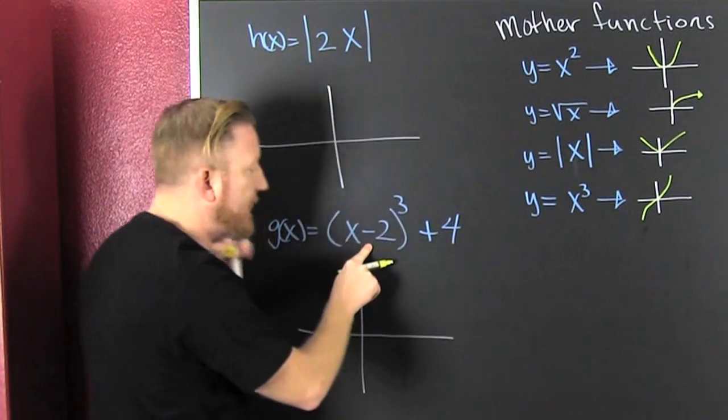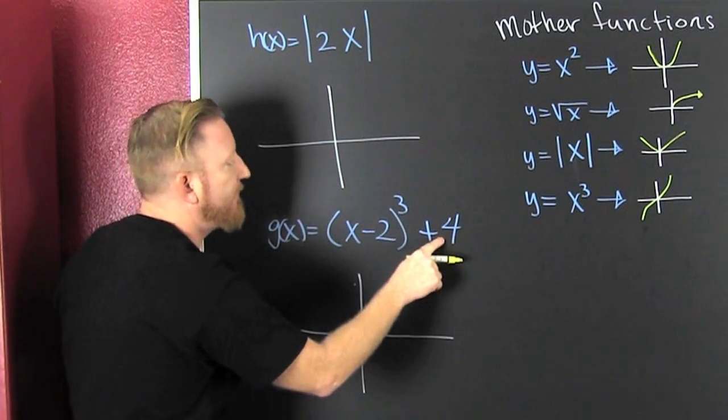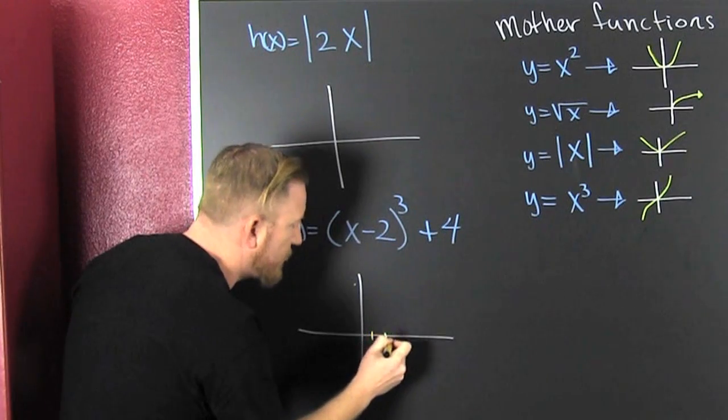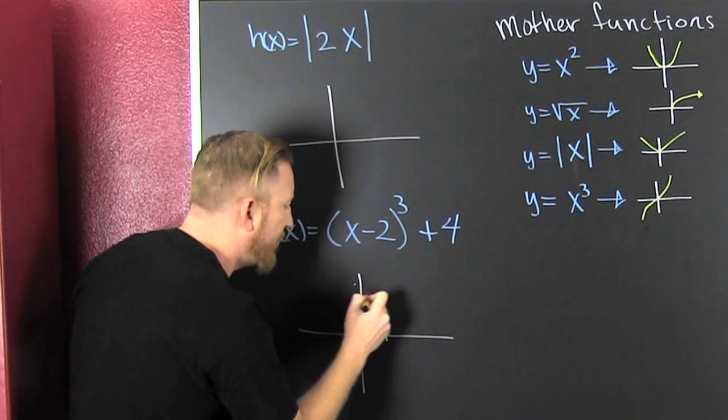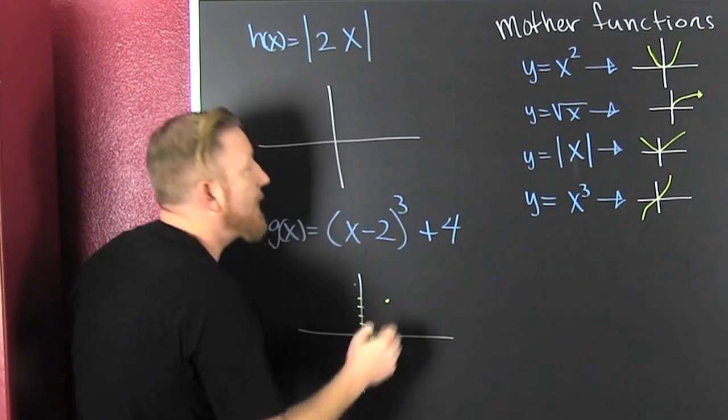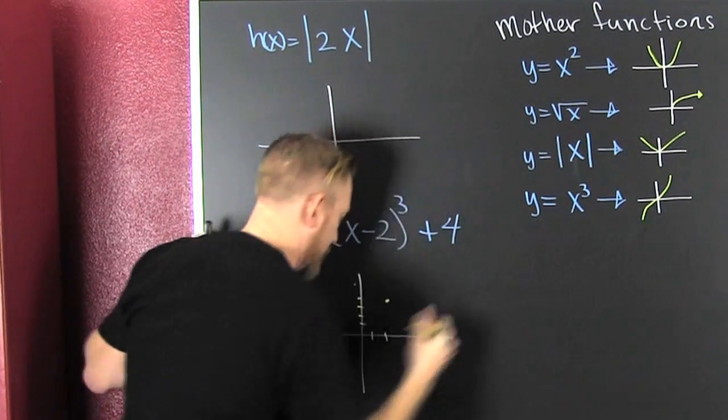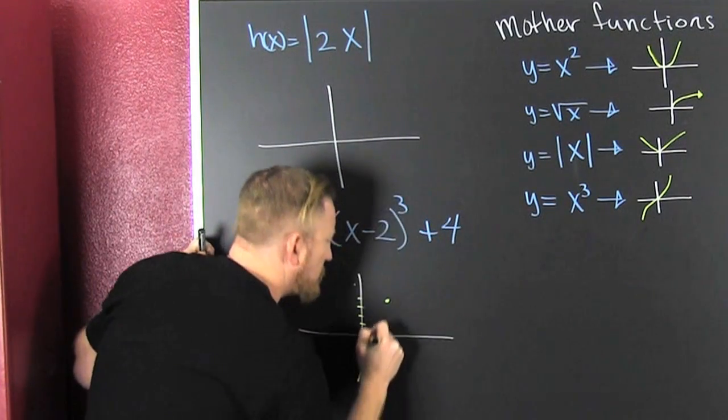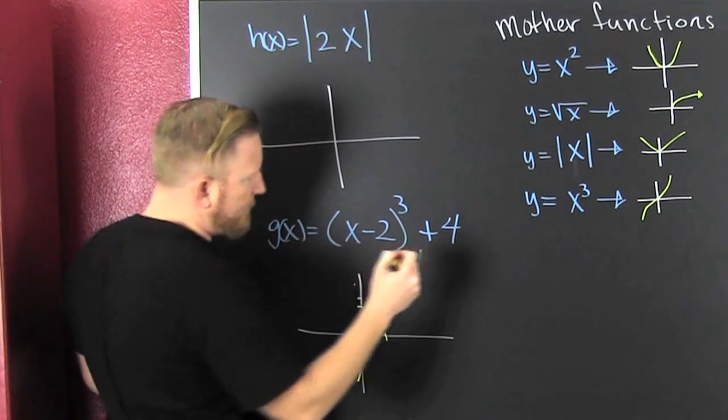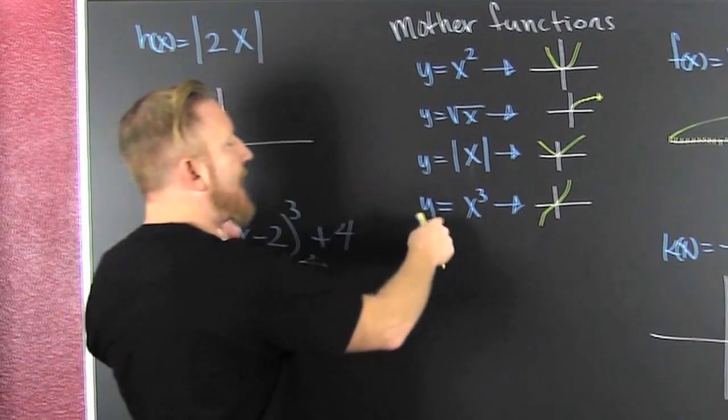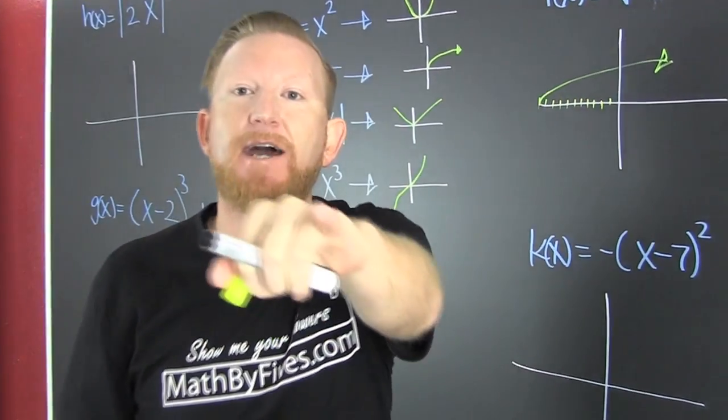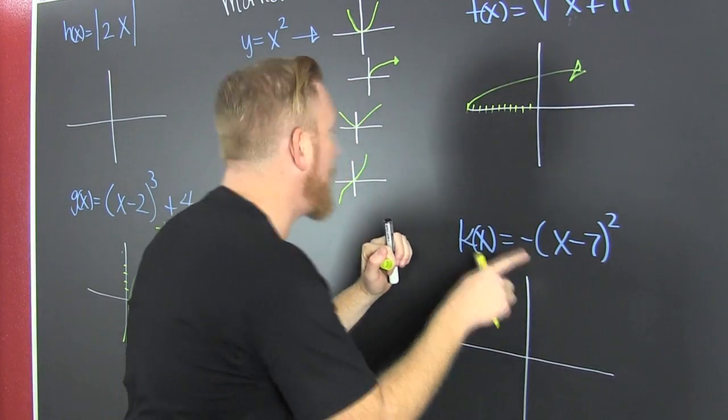Opposite the way you think - this says right 2, up 4. So I'm gonna go right 1, 2, up 1, 2, 3, 4, put a dot there, and then make that mother function right through that dot. That's the graph using that mother function.